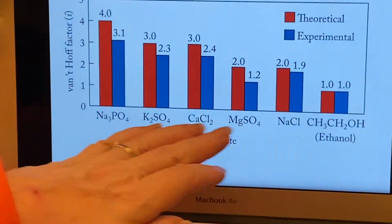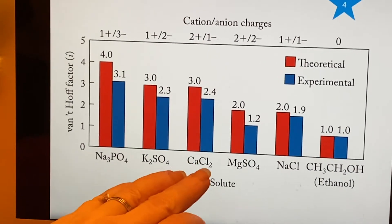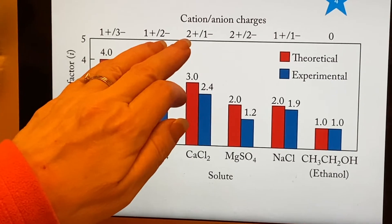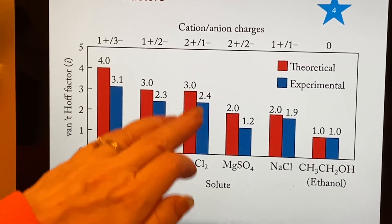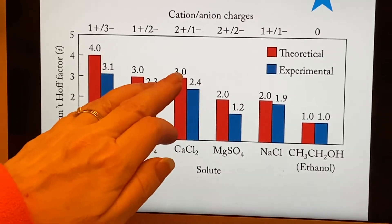And you can come across here and you can see some other examples. Here's calcium chloride. We would expect that to form three, but here we have a plus two charge and a minus one charge, and so we end up with something, well, it's greater than two, but it's not as big as three.